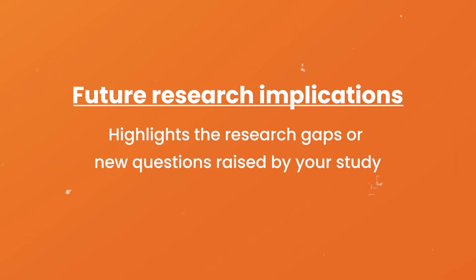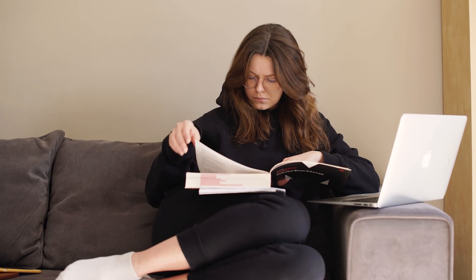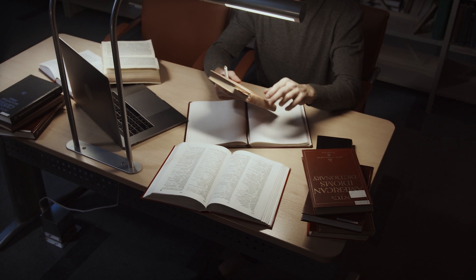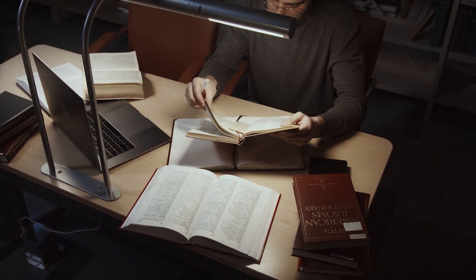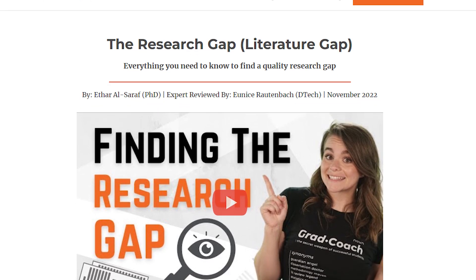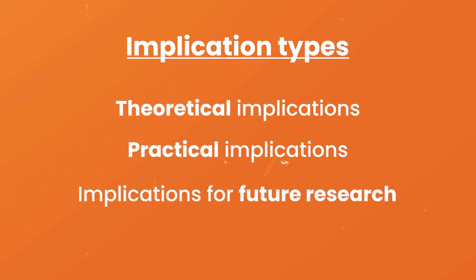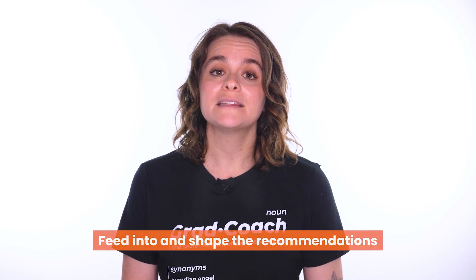Last but not least, there are the implications for future research. As the name suggests, this category highlights the research gaps or new questions raised by your study. For example, if your study finds mixed results regarding a relationship between two variables, it might imply the need for further investigation to clarify those findings. We've got a dedicated explainer video on research gaps — the link is in the description. To recap, the three types of implications are theoretical, practical, and implications for future research. Regardless of the category, these implications feed into and shape the recommendations, laying the foundation for the specific actions you'll propose in that section.